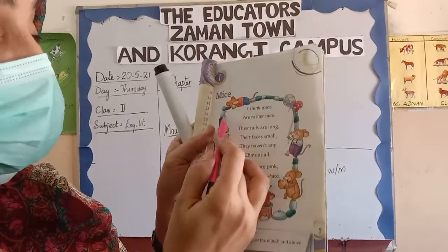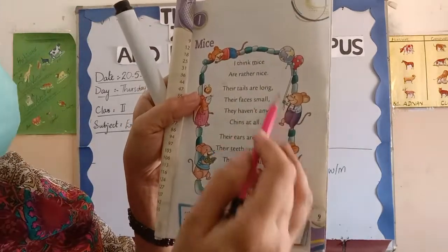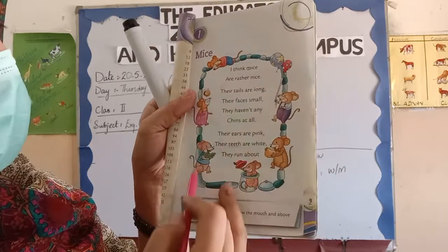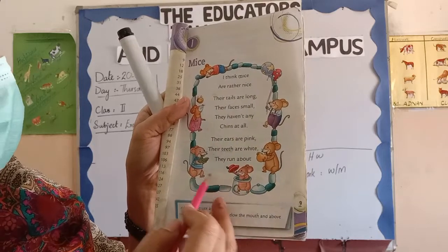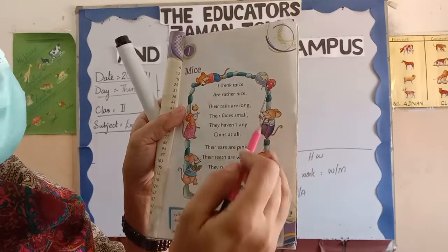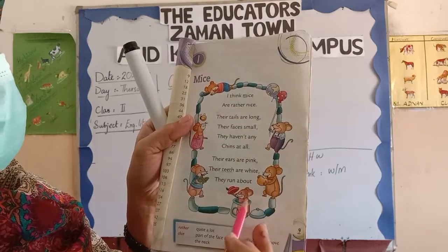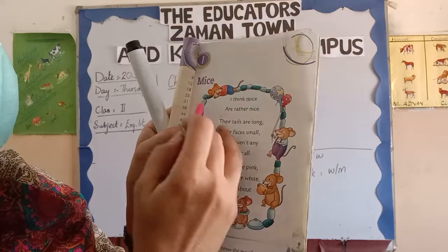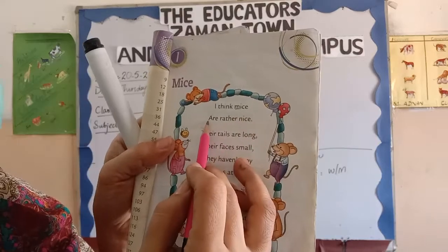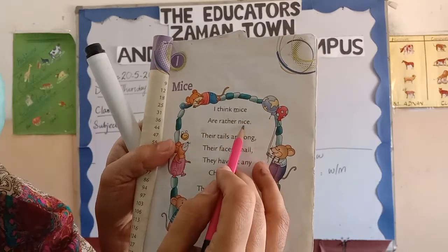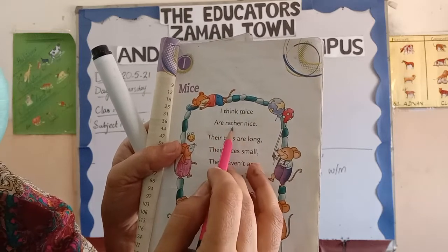You can see here is a very beautiful and colorful picture. We have some mice which are very cute and very colorful. Some are playing, one is eating, one is hiding, one has a blue balloon, and they are all playing in the area. In this poem, the poet is saying: I think mice are rather nice.